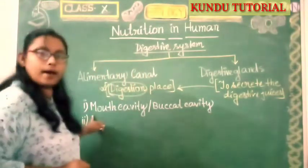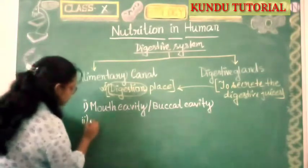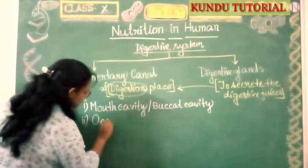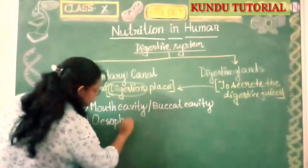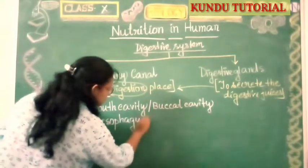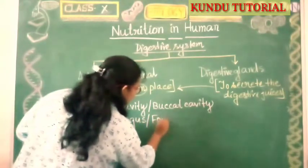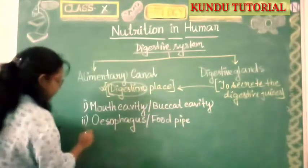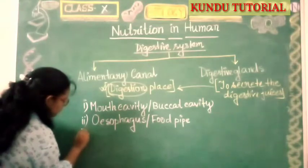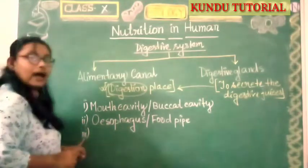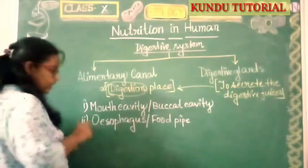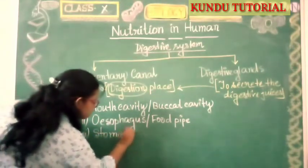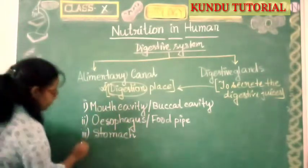Next, it will be followed by the esophagus — we call this the food pipe. After the esophagus, the third part of the alimentary canal will be the stomach.